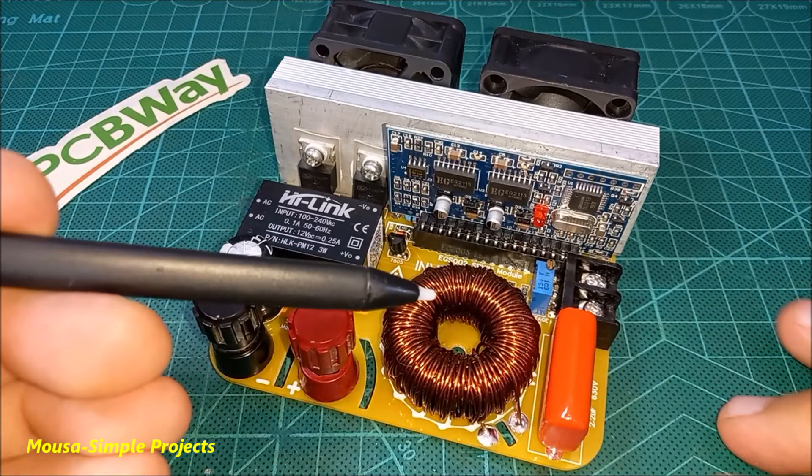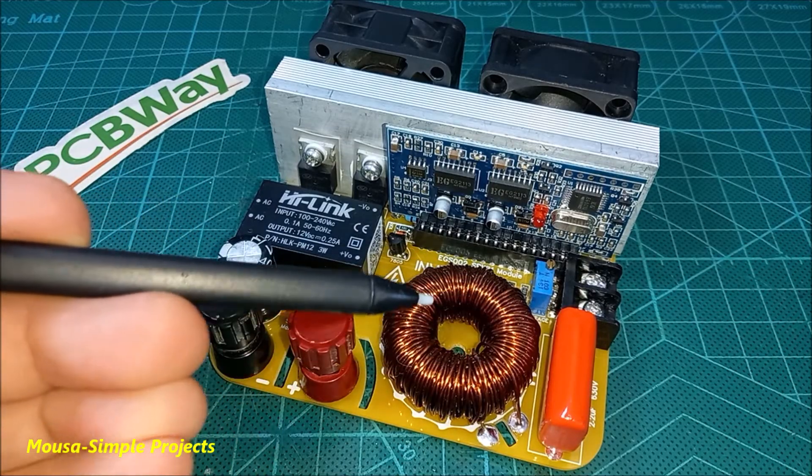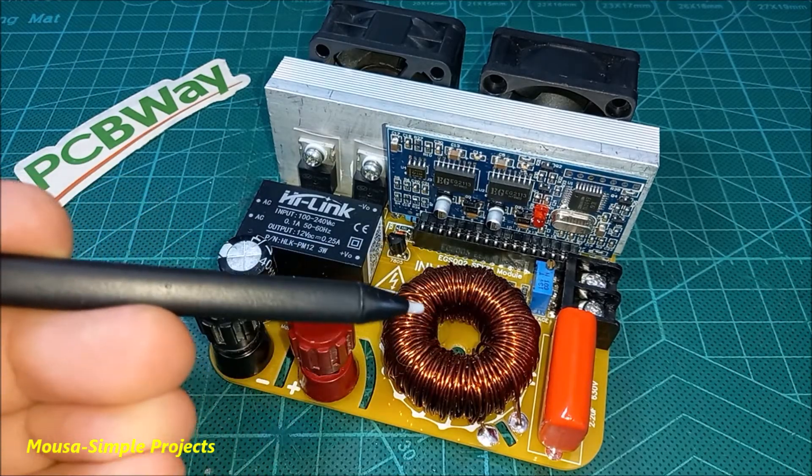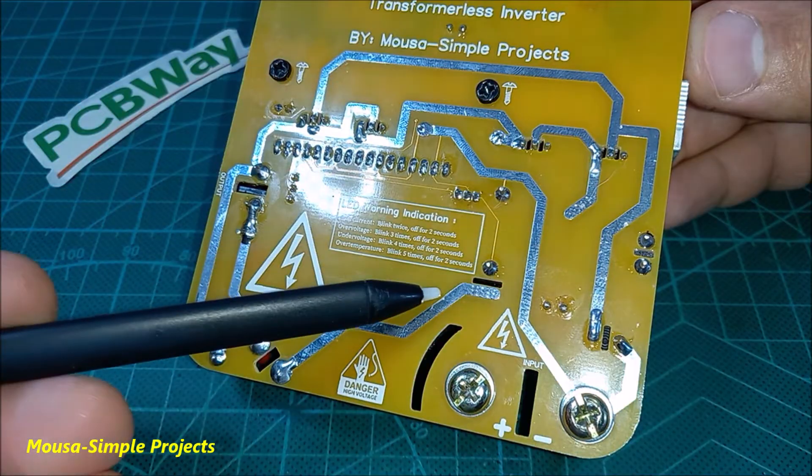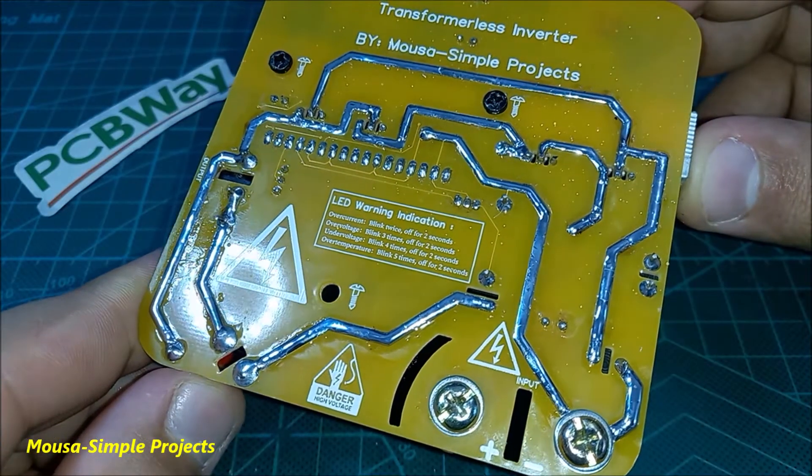This is an inductor to filter out the output waveform. It is not a transformer, so we can still call this circuit transformerless. I used exposed copper traces, so I can solder them to make them handle much more current.